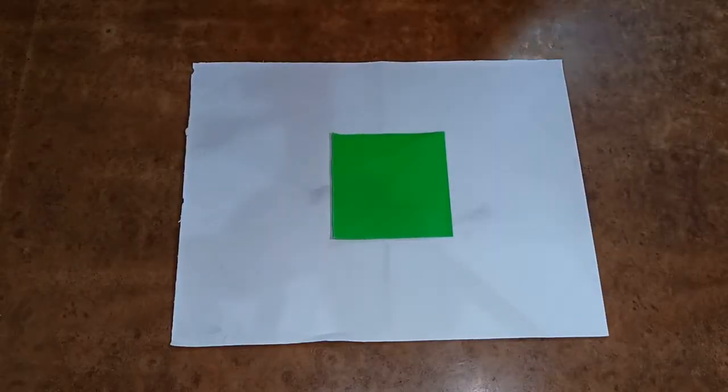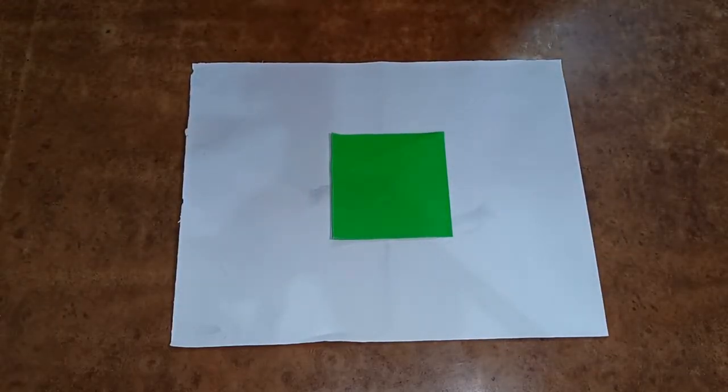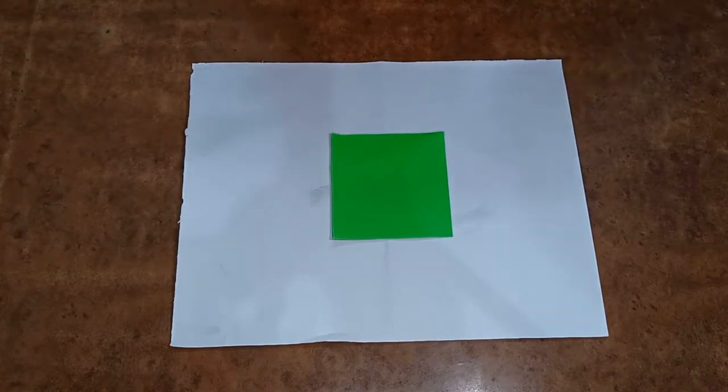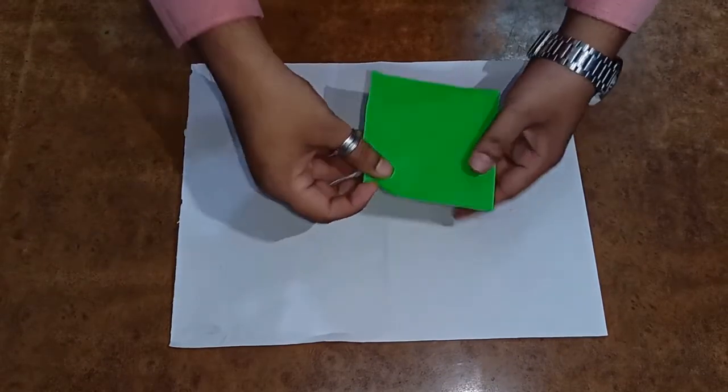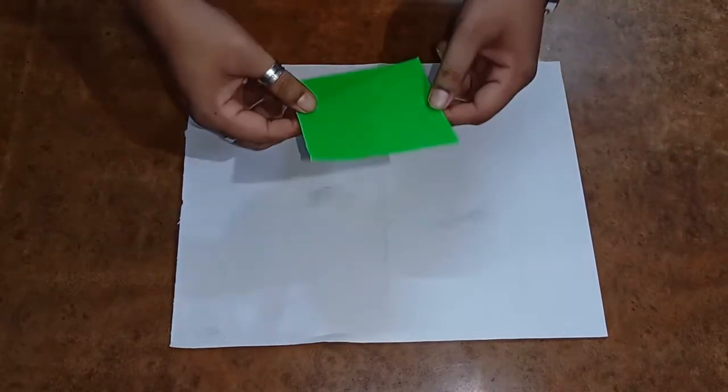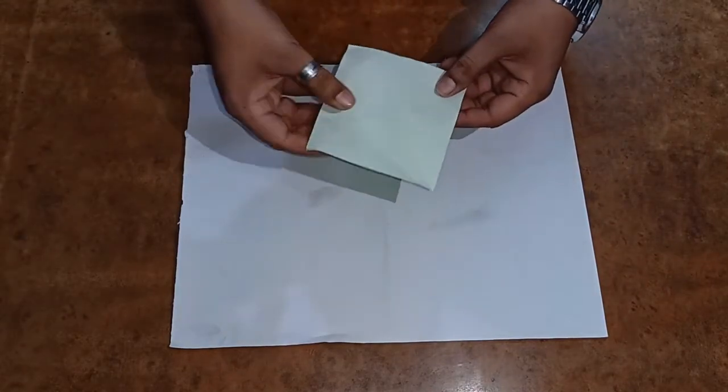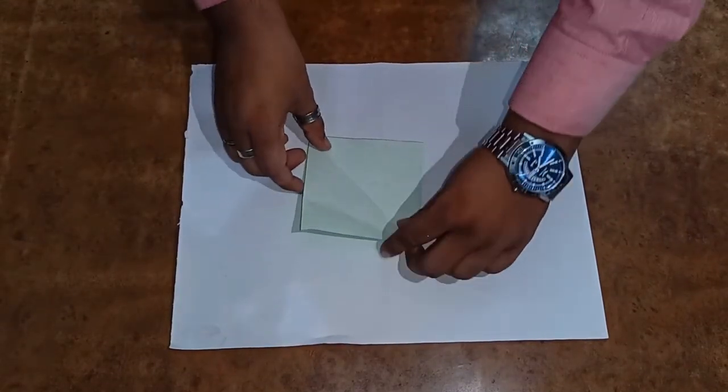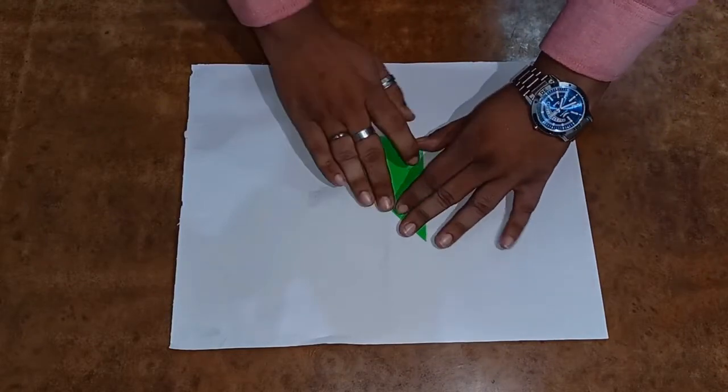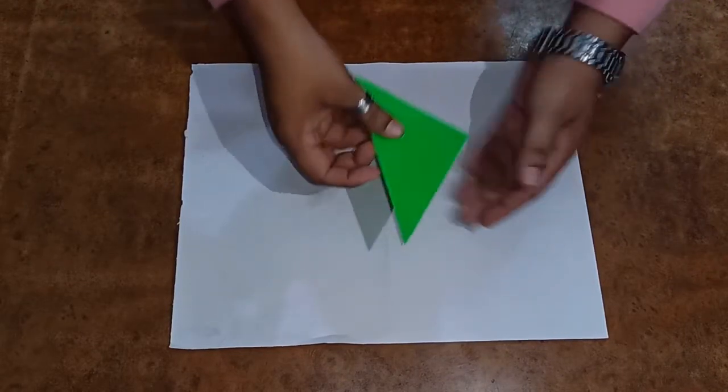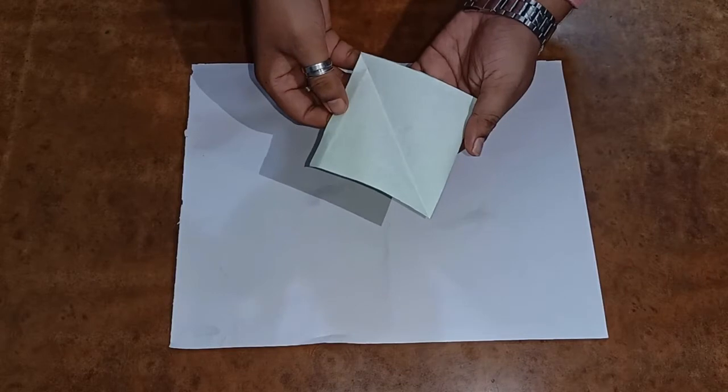So students, let's see how to make the leaf of a carrot. Now, for that, we require green fluorescent paper like this. Now first, what you have to do, you have to just fold from one edge to the other like this. Everyone see that? How I have folded?